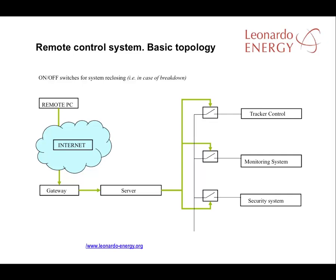Here is a basic topology for the remote control system. You can decide between different types of remote control depending on the level of performance you want. This remote control system has only on and off switches. In the case of high winds, for example, you could shut down a sun tracking system with this and reactivate it once more when the wind drops. Monitoring and security systems are also devices that might be used with this type of activation and deactivation remote option.